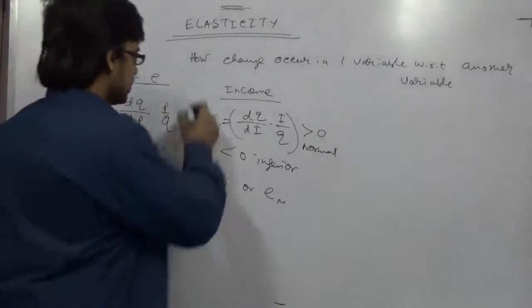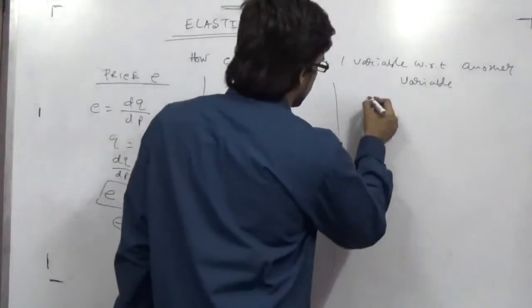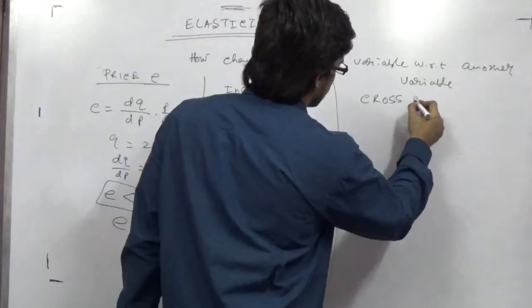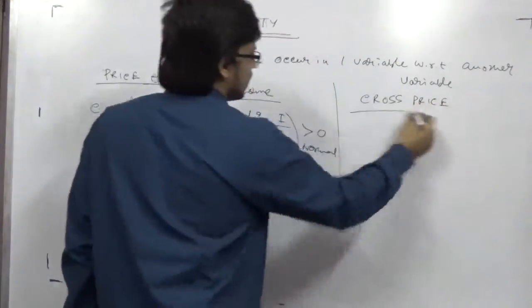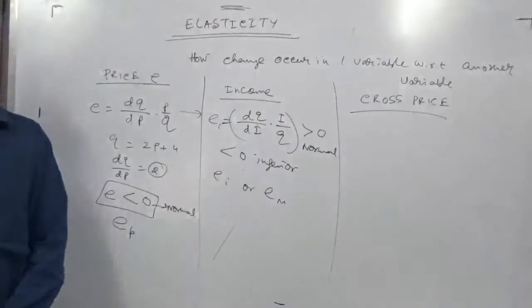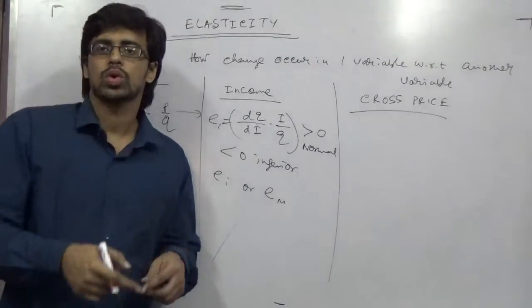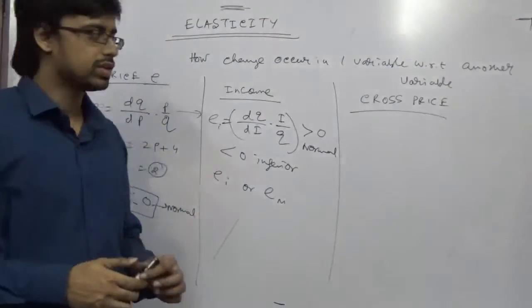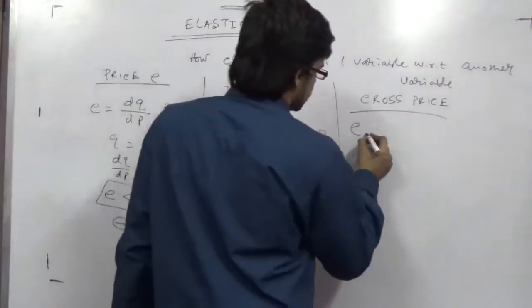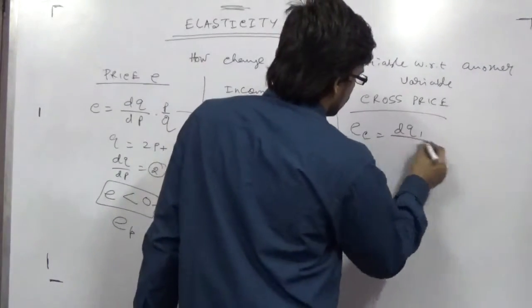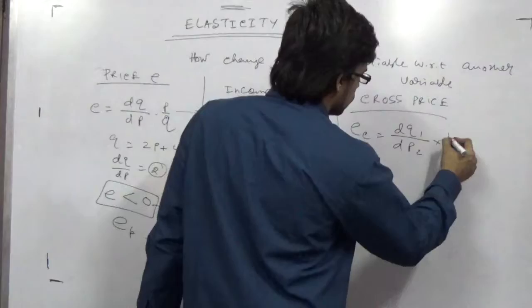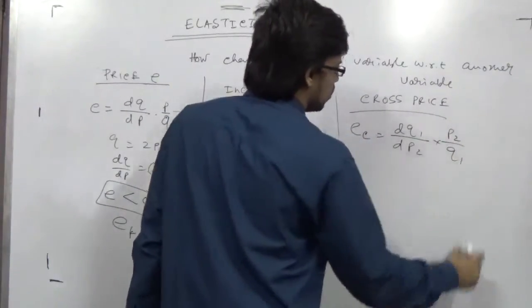Now going to the third elasticity and that is cross price elasticity. So what is cross price elasticity? For example, if price of a product changes, what happens with its related products quantity demand? This is expressed as dq1 by dp2 into p2 by q1.